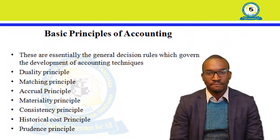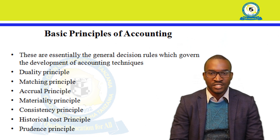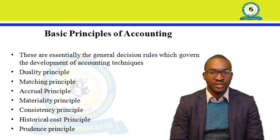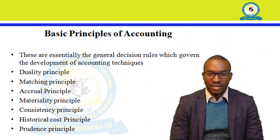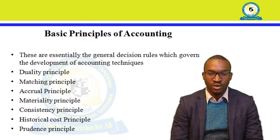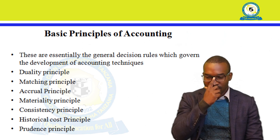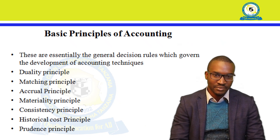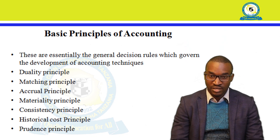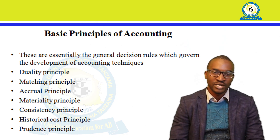The basic principles are the essential general decision rules which govern the development of accounting technique. These include: duality principle, matching principle, accrual principle, materiality, consistency, historical cost principle, and prudence. As you can see in these slides, I will explain them. The duality principle calls for double entry, whereby every debit entry should have a corresponding credit entry. The matching principle requires that revenue should be matched with expenses.